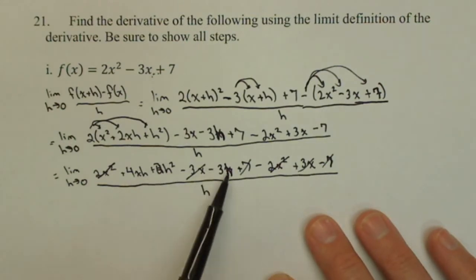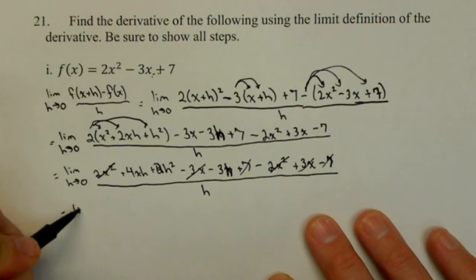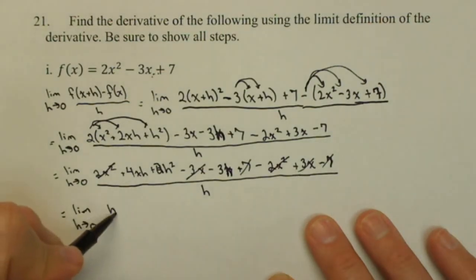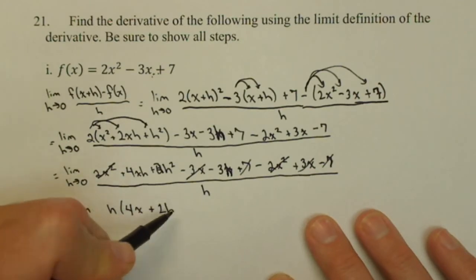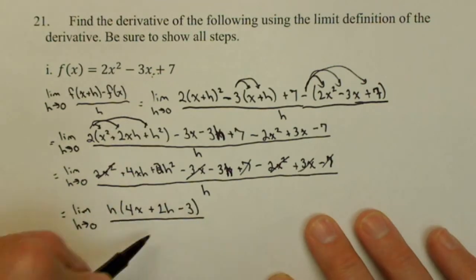Notice, all of my terms I have remaining have an h in them. So what I'm going to do is I'm going to factor that h out, so limit as h goes to 0 of h times 4x plus 2h minus 3, all over h, because right now it's still 0 over 0, but these h's will cancel.